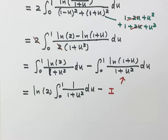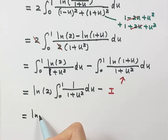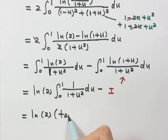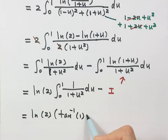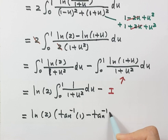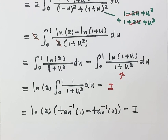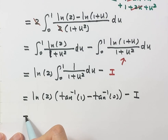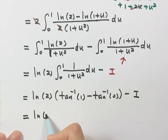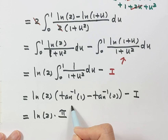The integral of 1/(1+u²) is inverse tangent. Plugging in the bounds: arctan(1) minus arctan(0) = π/4 minus 0 = π/4. So we have (log 2)(π/4) minus I.